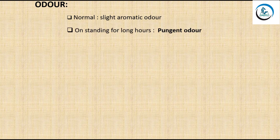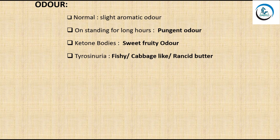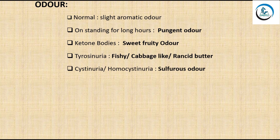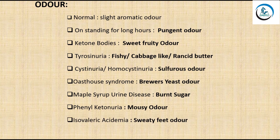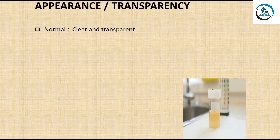Normally, urine has a slight aromatic odor. On standing for long hours it gives a pungent odor. Presence of ketone bodies may give a sweet, fruity odor. In tyrosinuria there is a fishy or cabbage-like or rancid butter smell. Cystinuria or homocystinuria gives a sulfurous odor. Brewer's yeast odor is seen in oast house syndrome, burnt sugar odor in maple syrup urine disease, mousy odor in phenylketonuria, and sweaty feet odor in isovaleric acidemia.